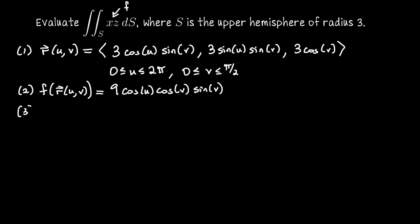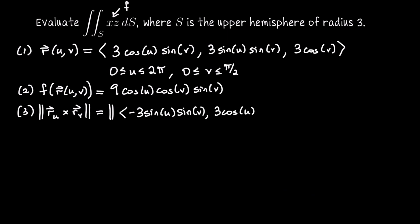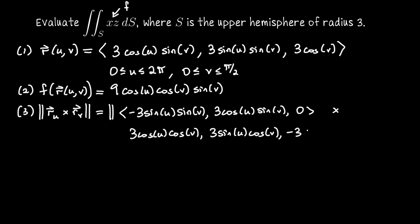The next piece of the integrand we need is the length of the cross product of the vectors r_u and r_v. The vector r_u, whose components are partial derivatives with respect to u, is: negative 3 sine(u) sine(v), 3 cosine(u) sine(v), and 0. We cross that with r_v, the partial derivatives with respect to v: 3 cosine(u) cosine(v), 3 sine(u) cosine(v), and negative 3 sine(v).